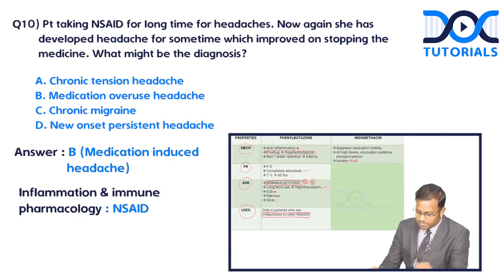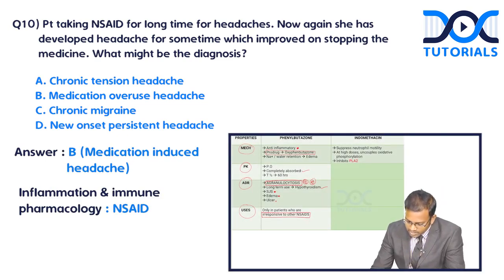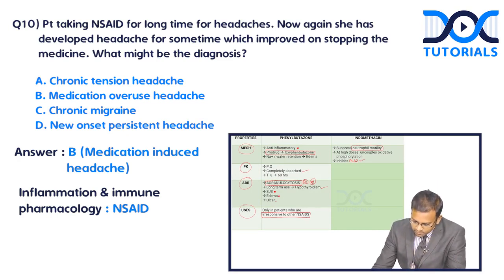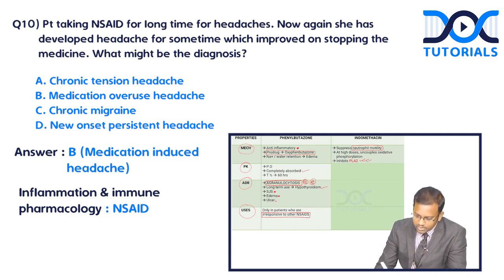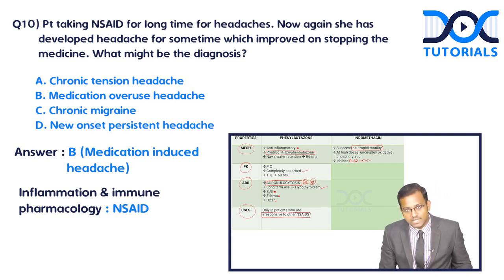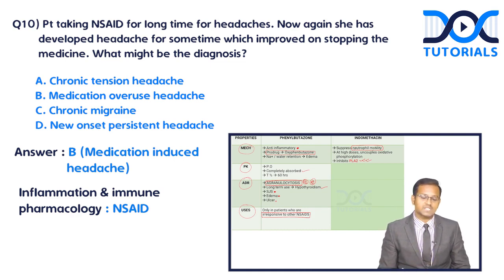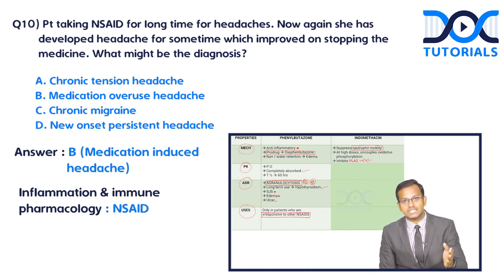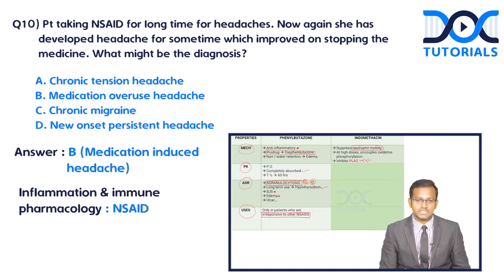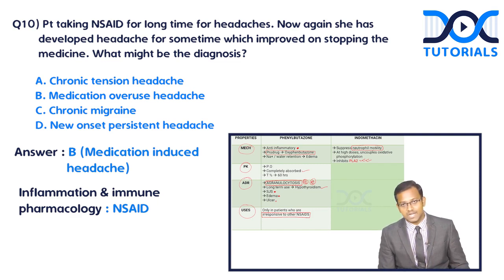Indomethacin has certain additional properties: it suppresses neutrophil motility and has phospholipase A2 inhibitory properties — similar to steroids, which also inhibit PLA2. By inhibiting phospholipase A2, indomethacin prevents the synthesis of arachidonic acid itself.